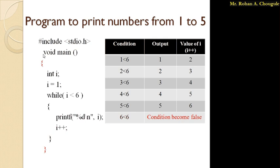Here I have declared one variable i of type integer — this is a declaration of a variable. Then, as we have to move from 1 to 5, we have to start from 1, so I have initialized the value of i to 1. If you wanted to print from 0 to 5, you would initialize i to 0. But here i is assigned the value 1. Next is our while loop.